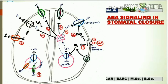Now we are going to talk about ABA signaling in stomatal closure. This is the most important function — ABA inhibits stomatal opening or promotes stomatal closure. Regarding the receptors involved in ABA signaling, there are three classes of ABA receptors: the first class is present on the plasma membrane, the second on the plastid, and the third in the cytosolic part.